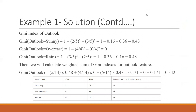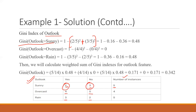For the outlook attribute we build a table: sunny has 2 Yes and 3 No out of 5; overcast has all Yes; rain has 3 Yes and 2 No. For sunny, Gini = 1 − ((2/5)² + (3/5)²) = 0.48. Similarly, overcast gives 0 and rain gives 0.48.